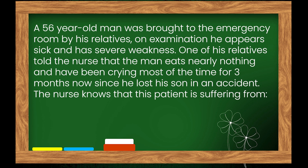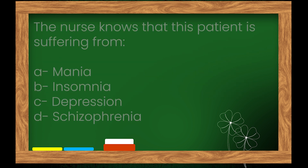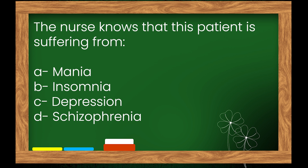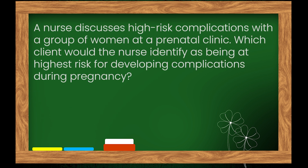Question 3: A 56-year-old man was brought to the emergency room by his relatives. On examination he appears sick and has severe weakness. A relative told the nurse that the man eats nearly nothing and has been crying most of the time for three months since he lost his son in an accident. The nurse knows this patient is suffering from: Options: A. Mania, B. Insomnia, C. Depression, D. Schizophrenia. The right answer is option C: Depression.